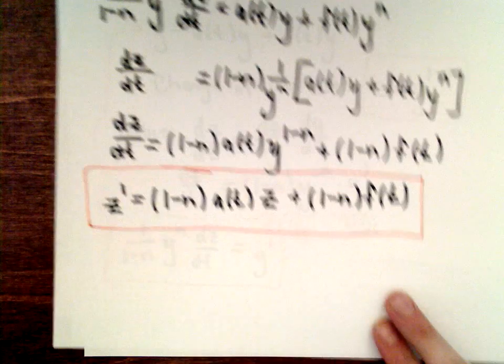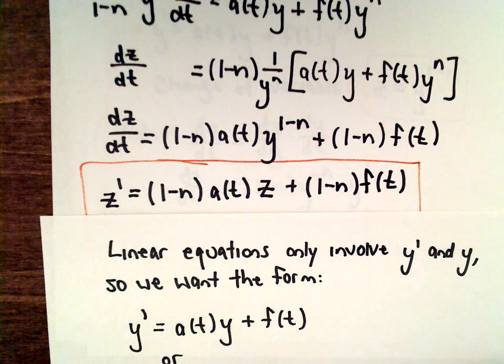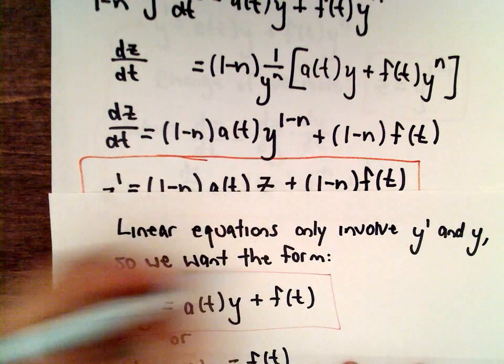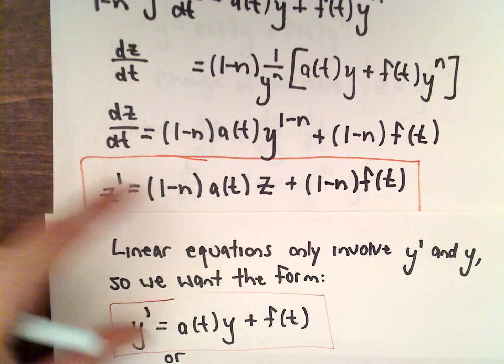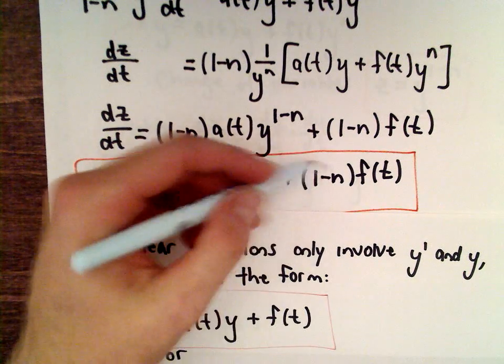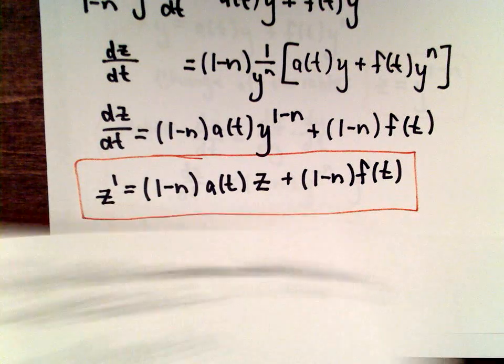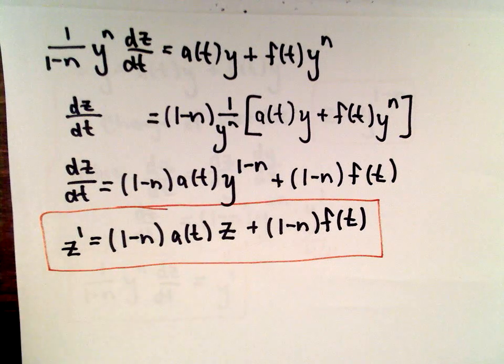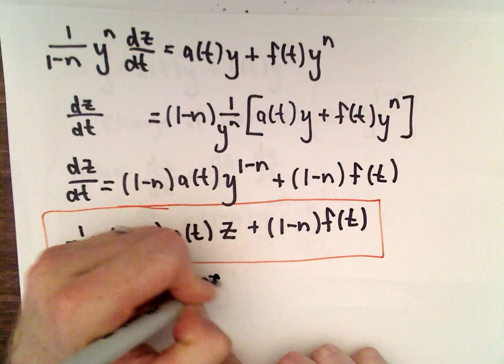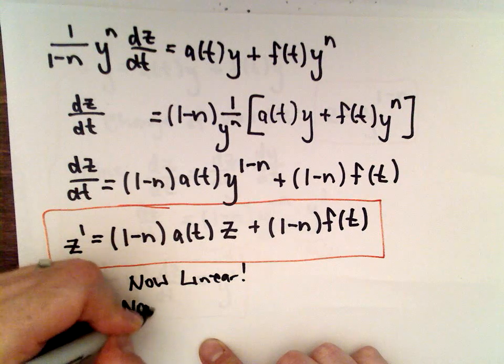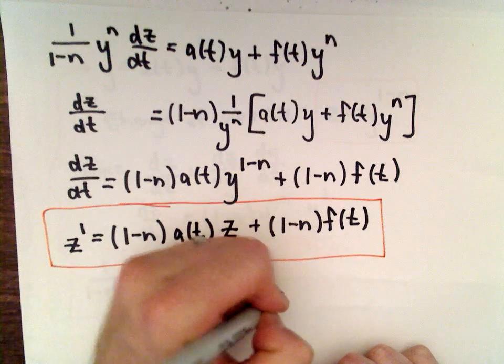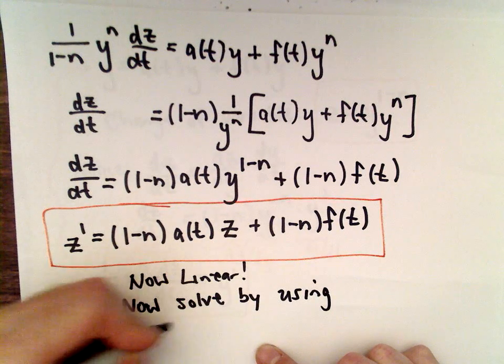So notice it really looks a lot like this form that we started off with. It says we've got some prime. We've got some function. We've got that variable to the first power. And then just some other function of t. You could have some number multiplied out front. So, lo and behold, we have now done it. We have done a change of variable. This is now linear. And we can now solve it by using integrating factors.